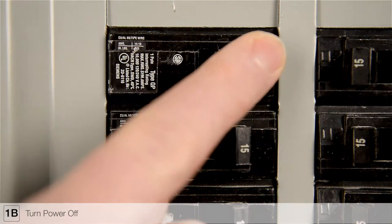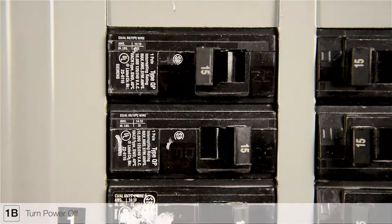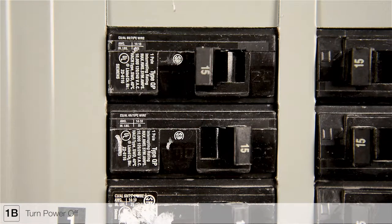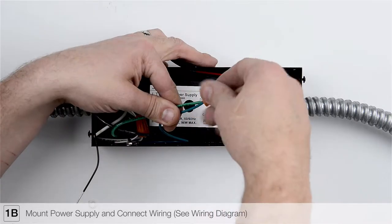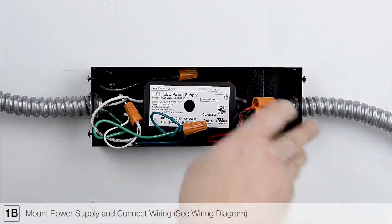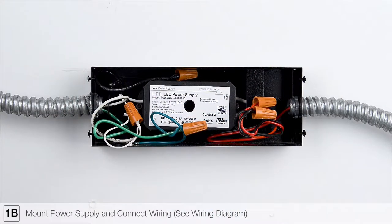Before doing any electrical wiring, always ensure the power is turned off at the breaker panel. Mount the remote power supply in an accessible area nearby, for example in a closet or inside a cabinet.